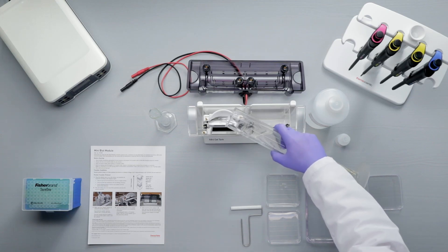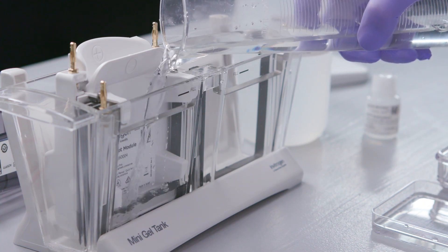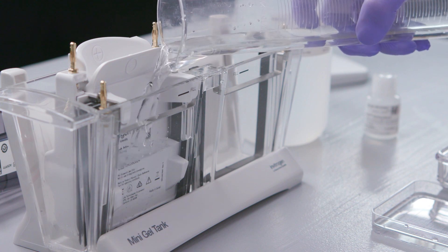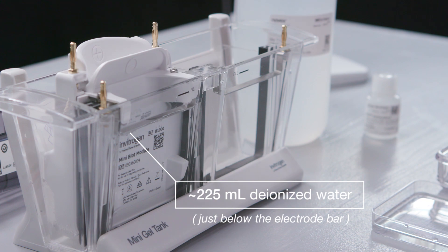Extra transfer buffer can be added to the module core to submerge the sandwich, but don't fill it above the gasket. Add transfer buffer or deionized water, about 225 milliliters, to the chamber, just below the electrode bar.